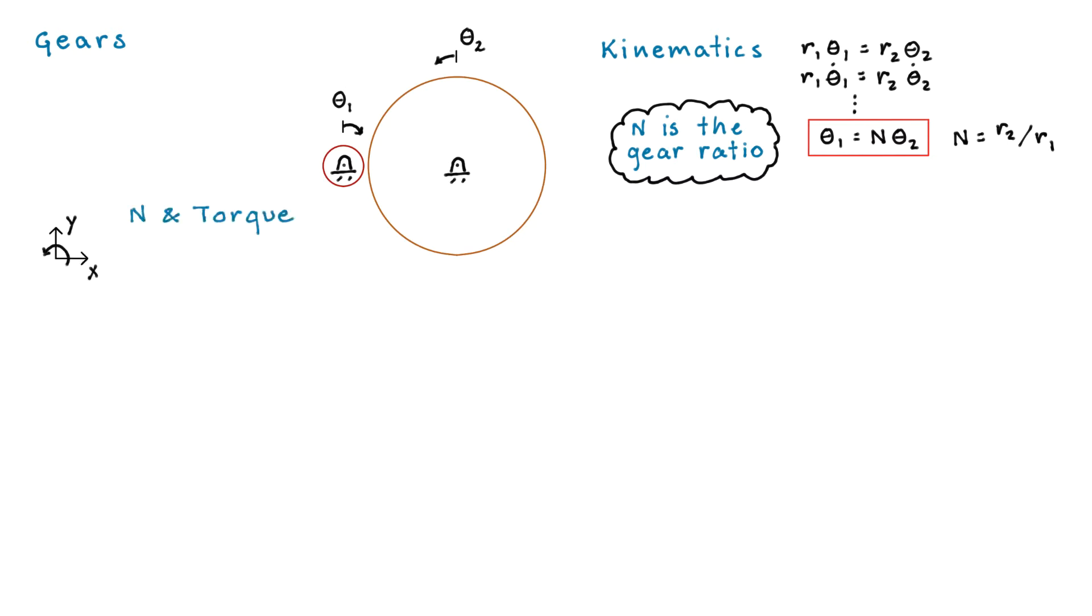Now let's look at how the gear ratio affects the torque that gets transmitted from the little gear to the big gear. And we'll do this by just solving a statics problem. Now you've probably already figured out my notation that the little gear is gear 1 and the big gear is gear 2.